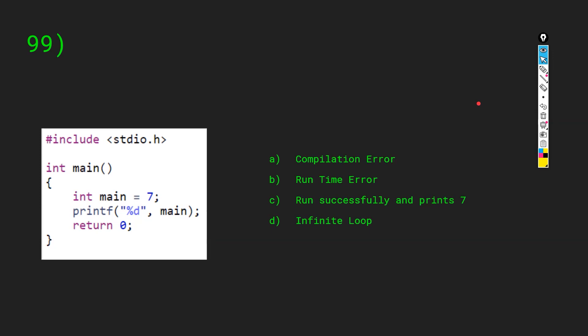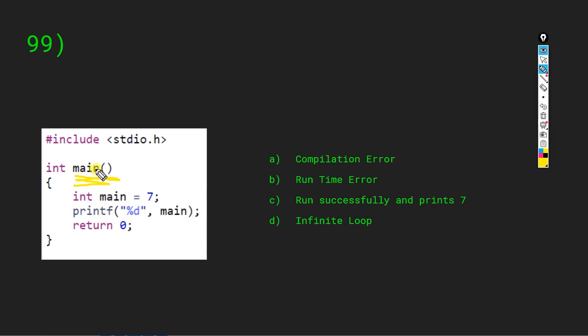Question 99: we have int main equals 7, then printf(main), return 0. Always remember: 'main' is not a keyword in C. So you can use 'main' as a variable name and the code will run just as with any other variable name. The answer is C: runs successfully and prints 7.